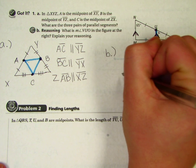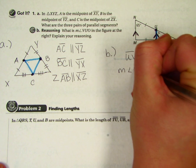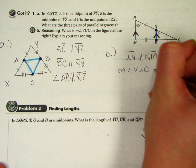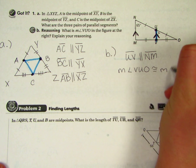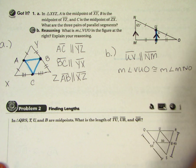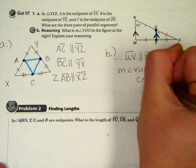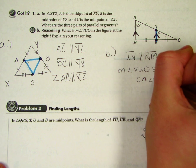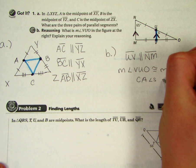So I'm going to write that down. The measure of angle V, U, O is congruent to the measure of angle M, N, O. They're corresponding angles because of parallel lines.